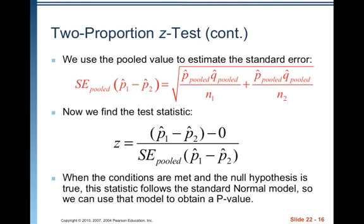And now we find the test statistic. Z equals P hat 1 minus P hat 2 minus 0, because that's the hypothesized value for P1 minus P2, over the standard error of the pooled P hat 1 minus P hat 2. When the conditions are met and the null hypothesis is true, this statistic follows the standard normal model, so we can use that model to obtain a P value.